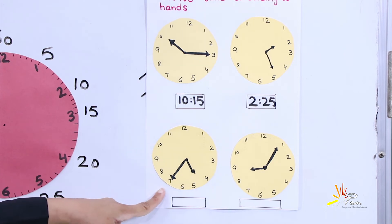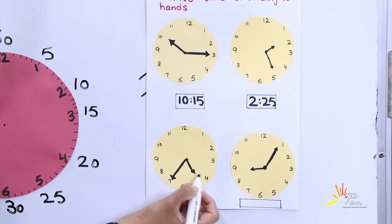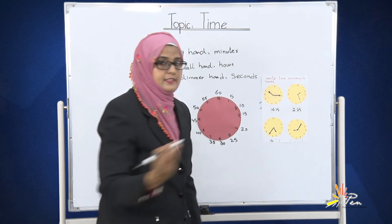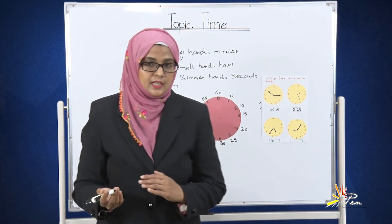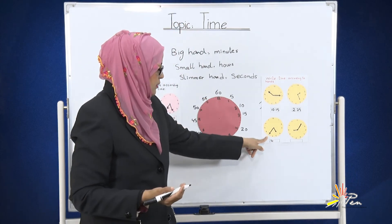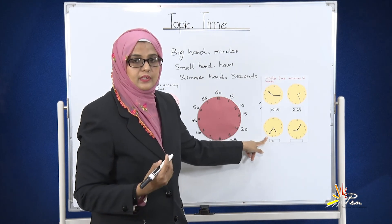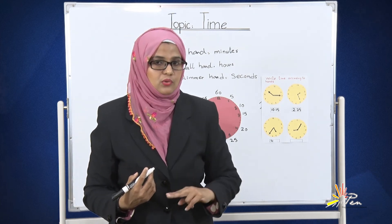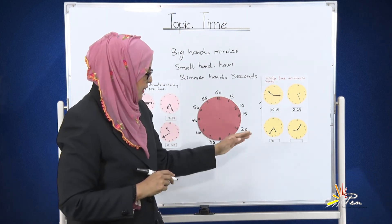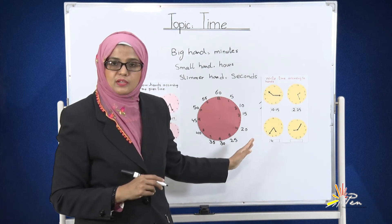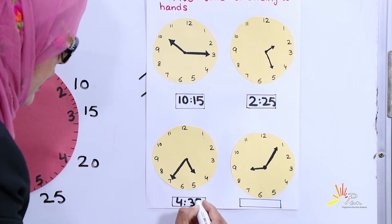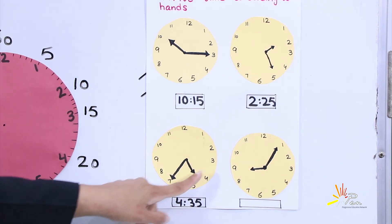The third clock is telling us another time. Let's see. The small hand is at the number 4, and the big hand is at the number 7. Read the table of 5 to the number 7: 5 ones are 5, 5 twos are 10, 5 threes are 15, 5 fours are 20, 5 fives are 25, 5 sixes are 30, and 5 sevens are 35. We will write here 35. 4:35.